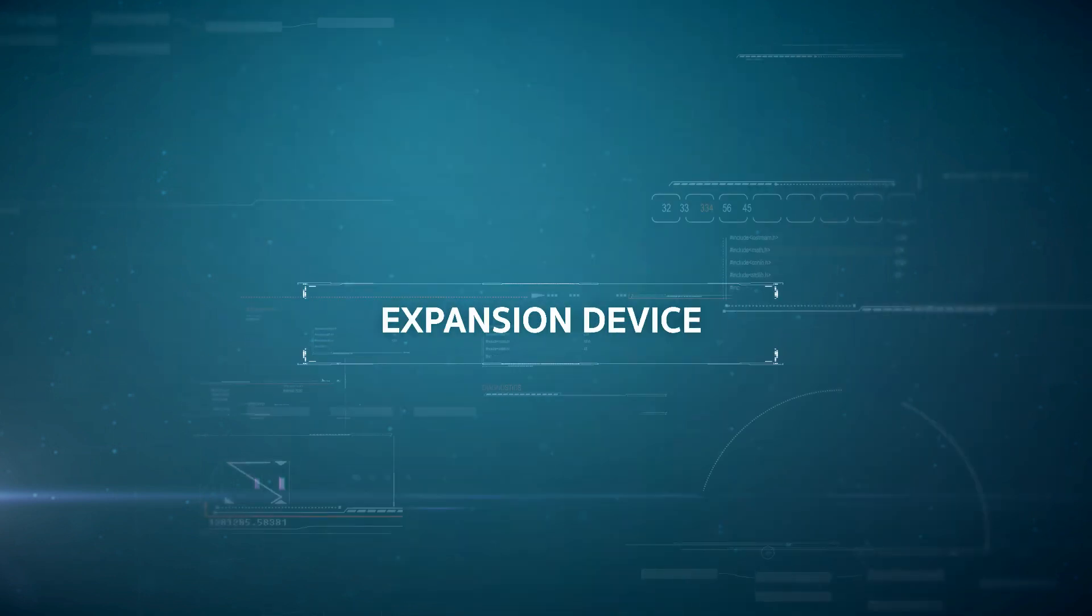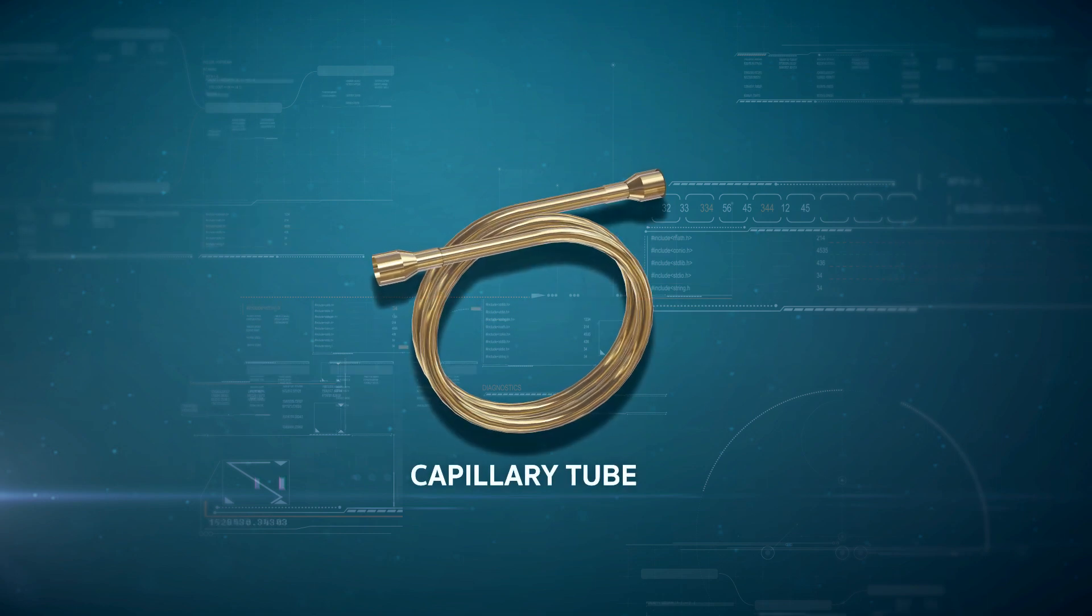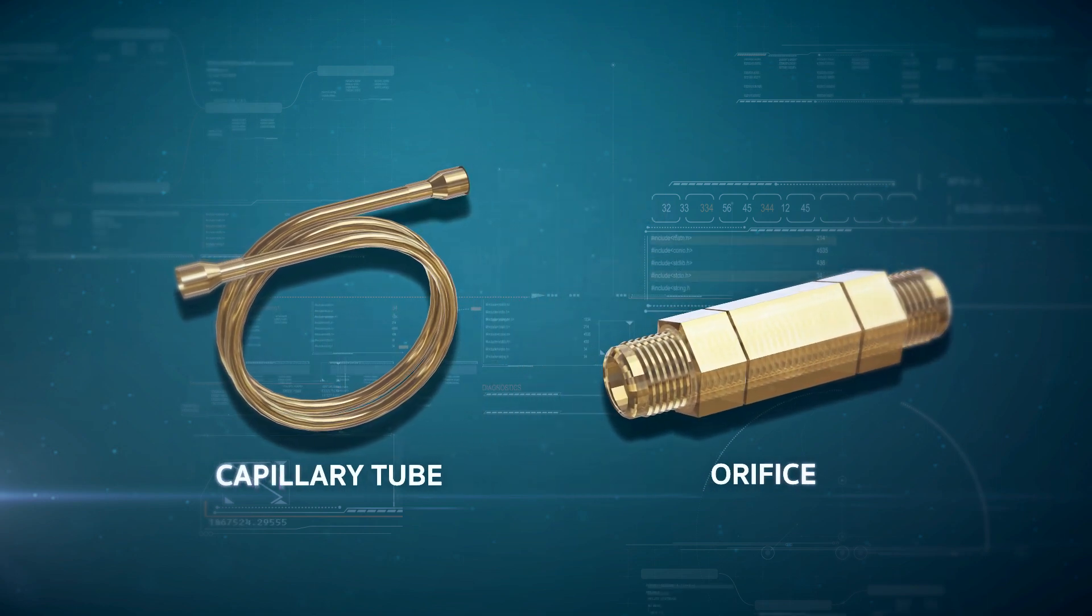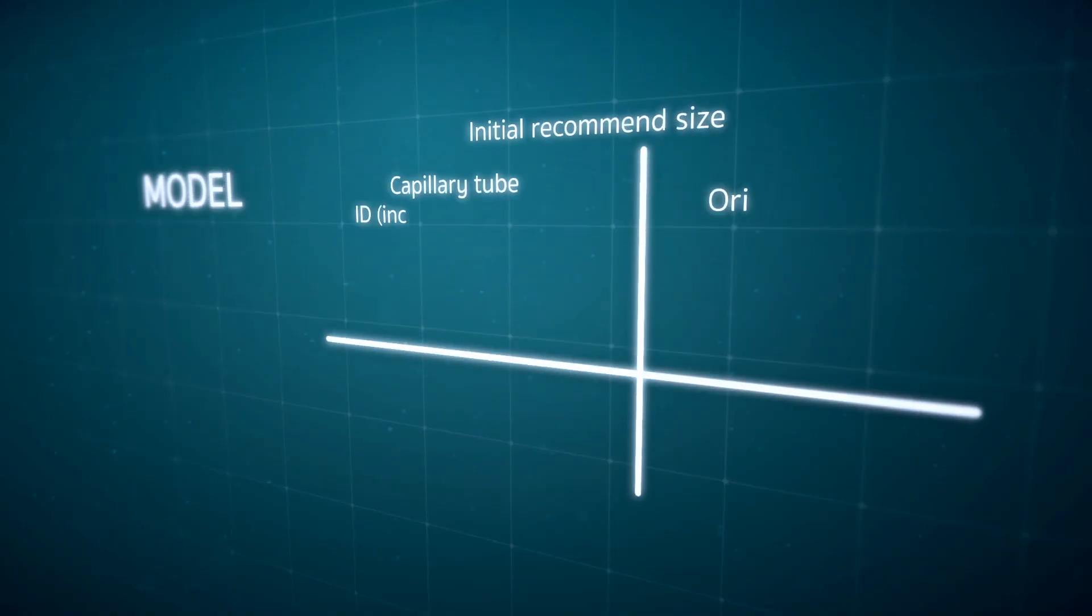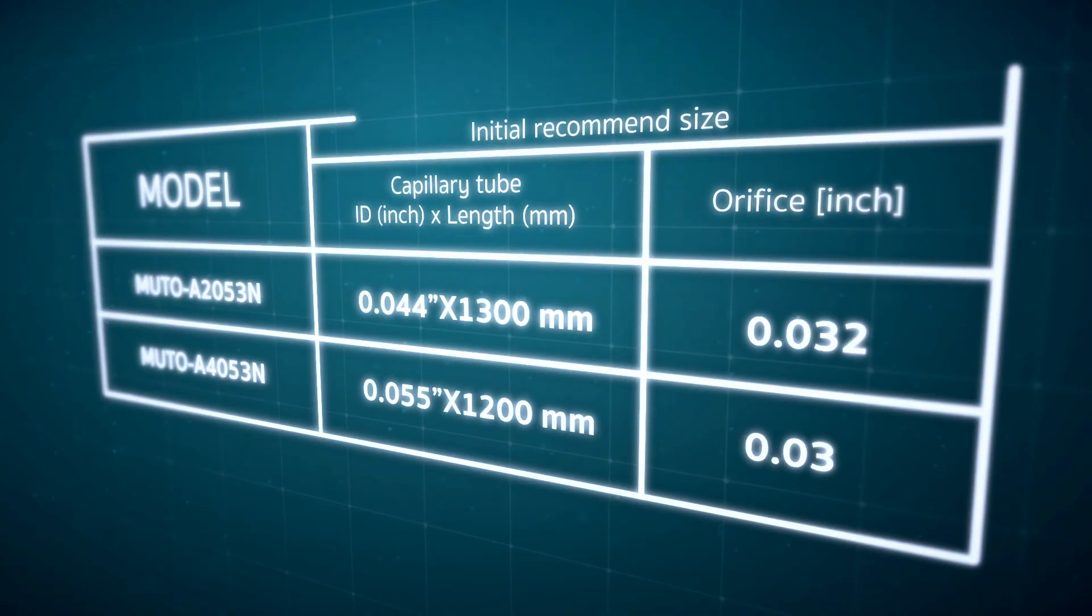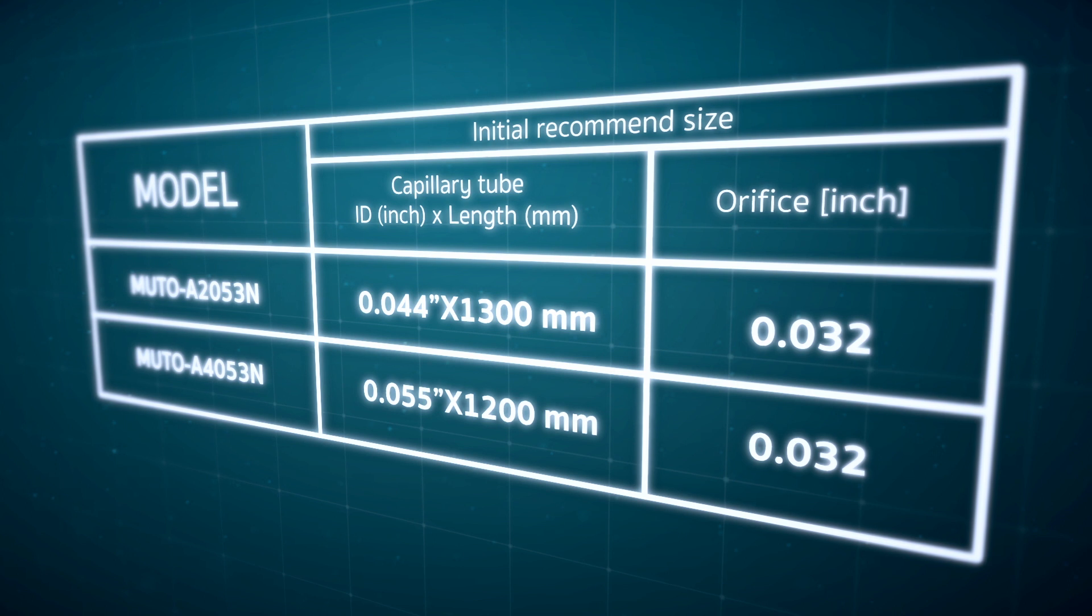There are two types of flow controllers to choose from. Type 1: capillary tube or orifice for economical use. The list of compatible sizes of capillary tube and orifice is as shown.